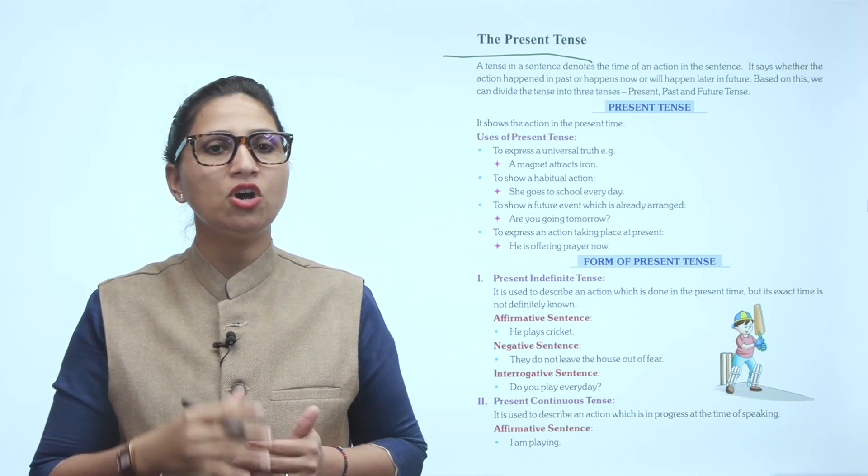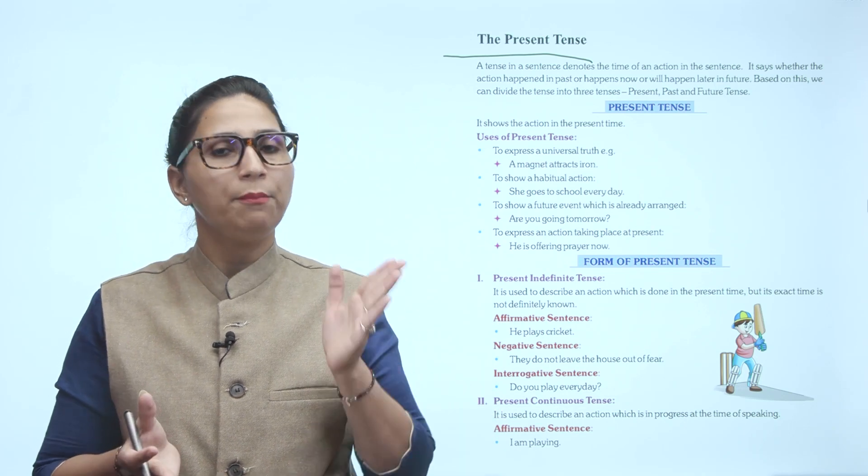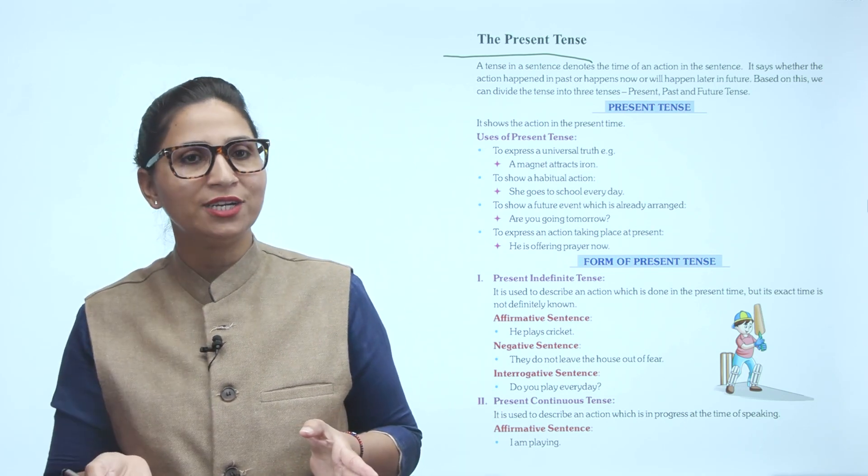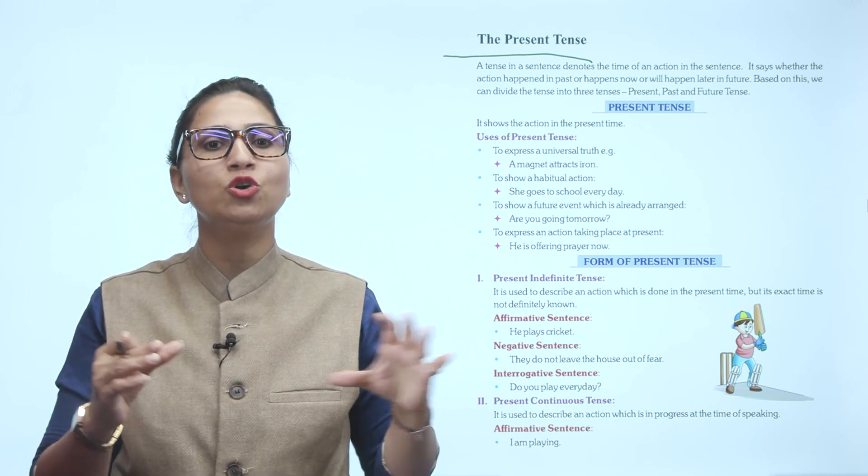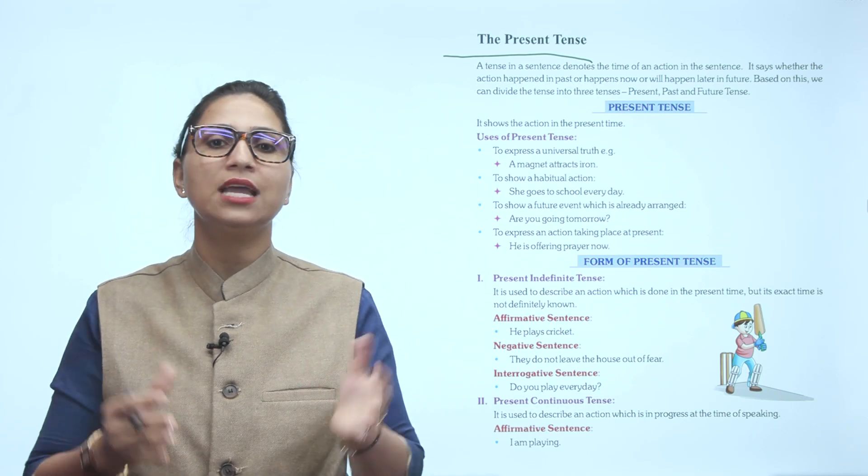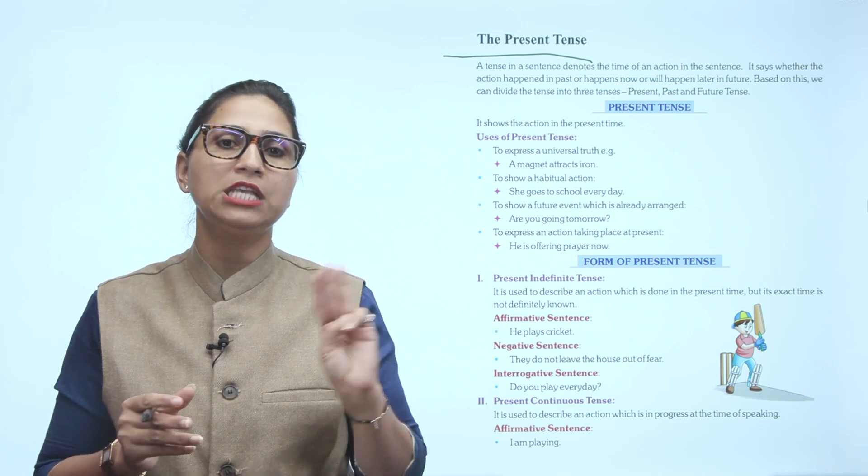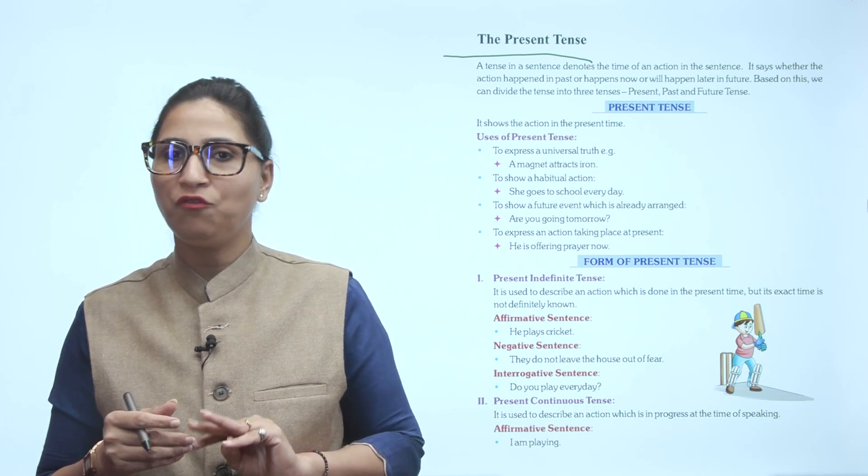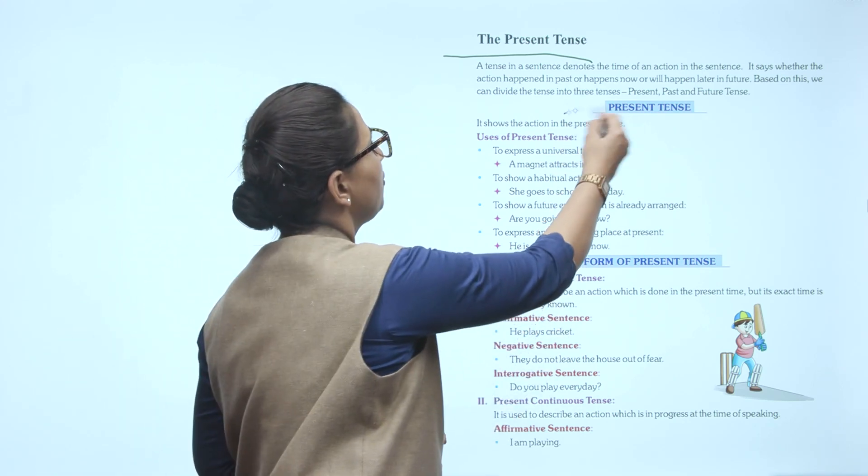Based on this, we can divide the tenses into three types: present, past, and future. The tense categorizes sentences based on the time of an action. There are three base categories: present, past, and future.